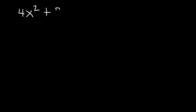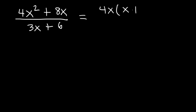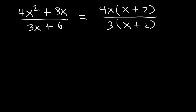Now, what about this example: 4x squared plus 8x divided by 3x plus 6? In this example, we need to factor out the GCF. The greatest common factor of the two terms on top is 4x. 4x squared divided by 4x is x, and 8x divided by 4x is positive 2. On the bottom, we can take out the GCF, which is 3. 3x divided by 3 is x, and 6 divided by 3 is 2. We can cancel x plus 2, so the final answer is 4x divided by 3.